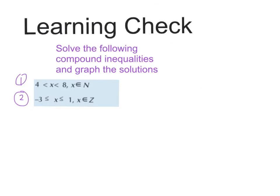For the learning check: complete the following compound inequalities and graph the solutions. First: 4 < x < 8, where x is an element of the natural numbers. Second: -3 ≤ x ≤ 1, where x is an element of ℤ.